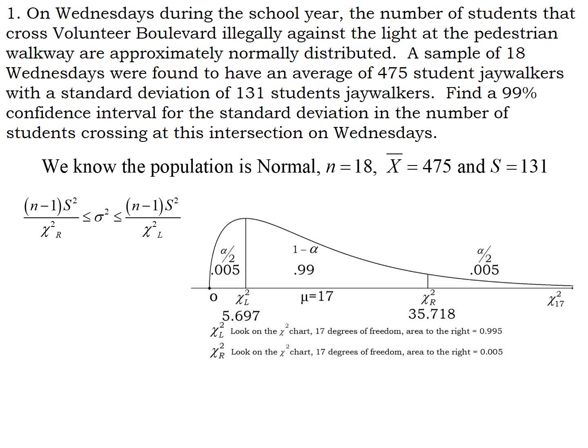Now that we have our chi-squared scores, we're going to plug them in. Pay close attention to the formula — the right chi-squared score goes in the fraction that appears on the left. Also, the formula as stated is for the variance sigma squared, but we want a confidence interval for the standard deviation sigma. So if sigma squared is between those two numbers, then sigma is going to be between the square roots of those two numbers.